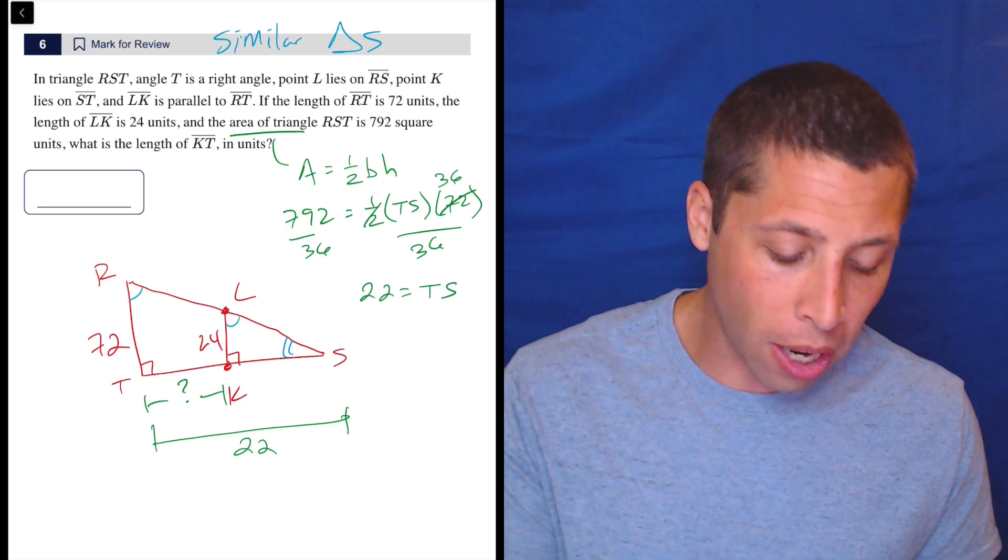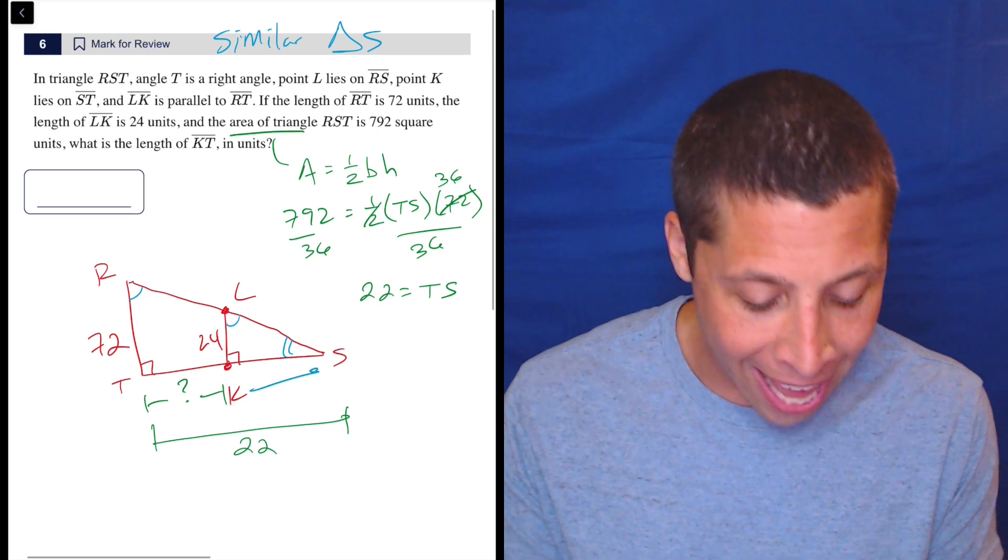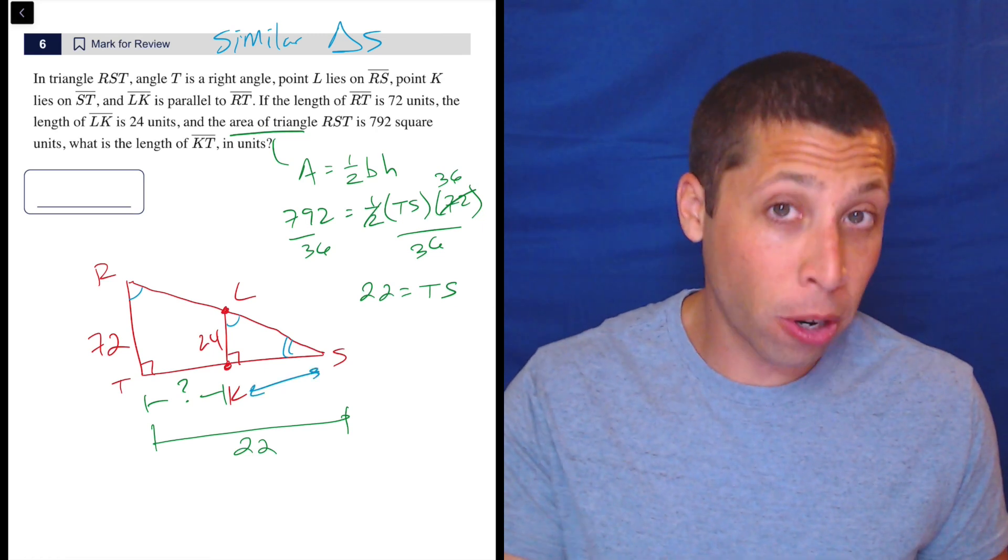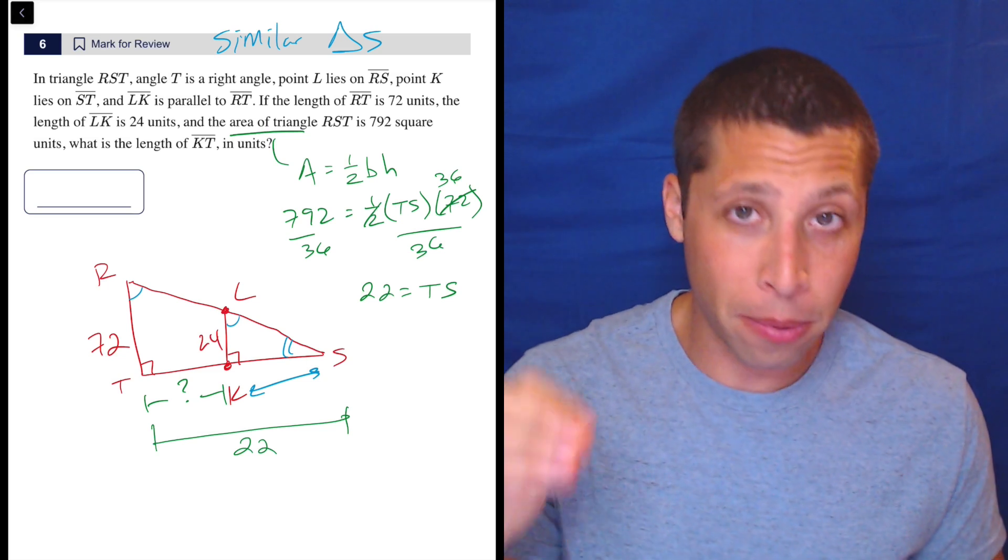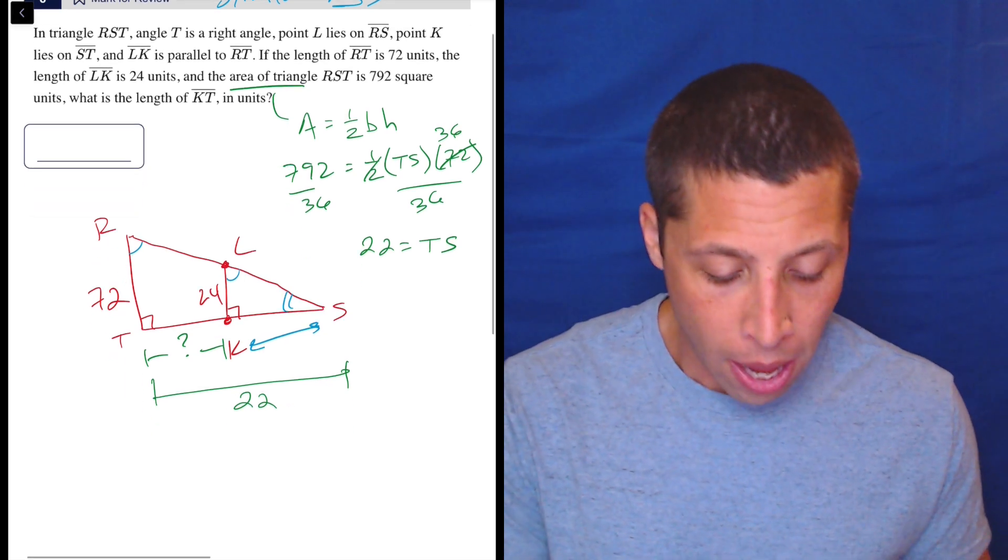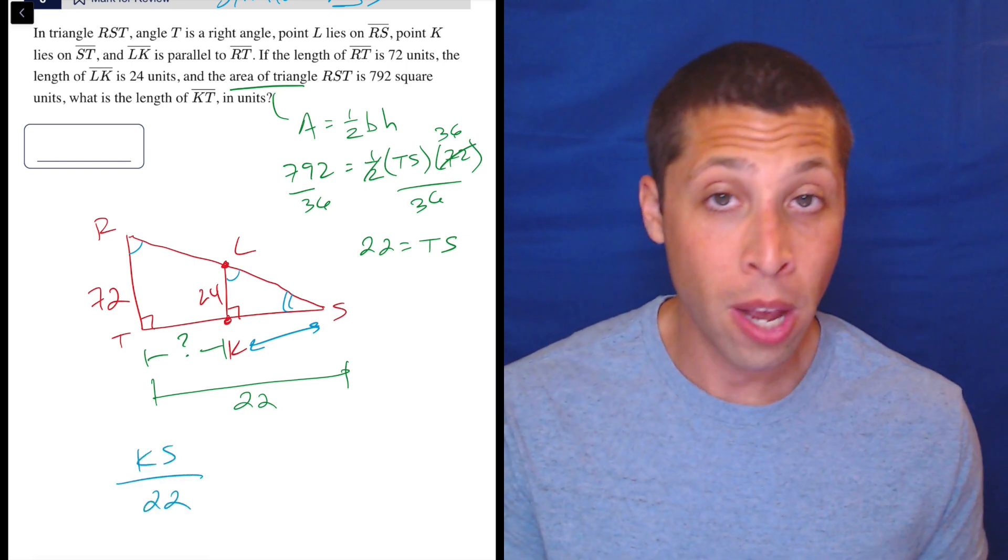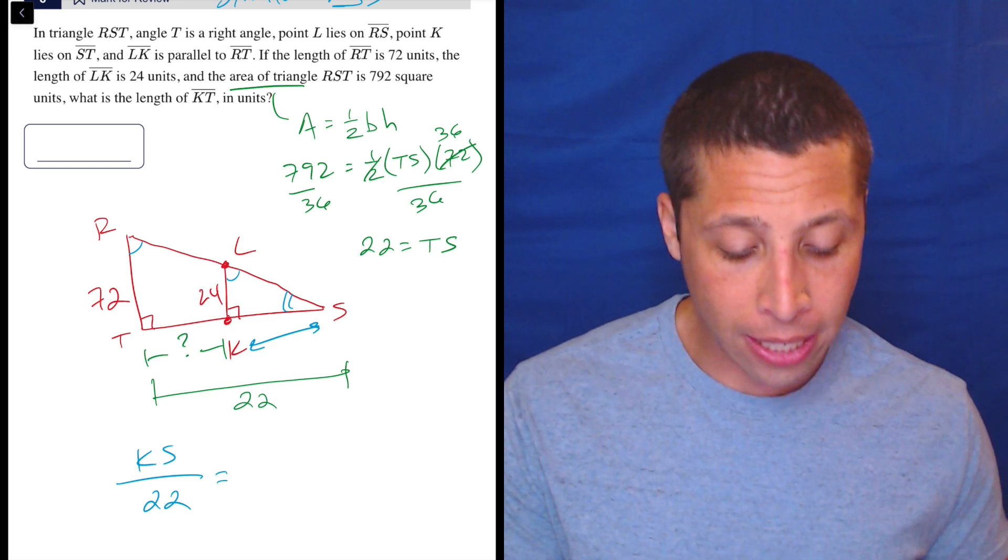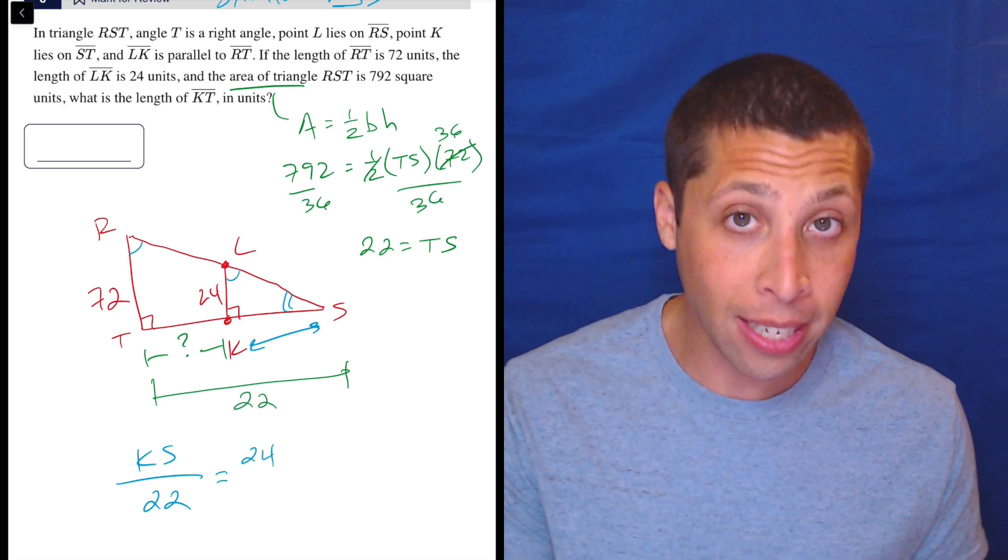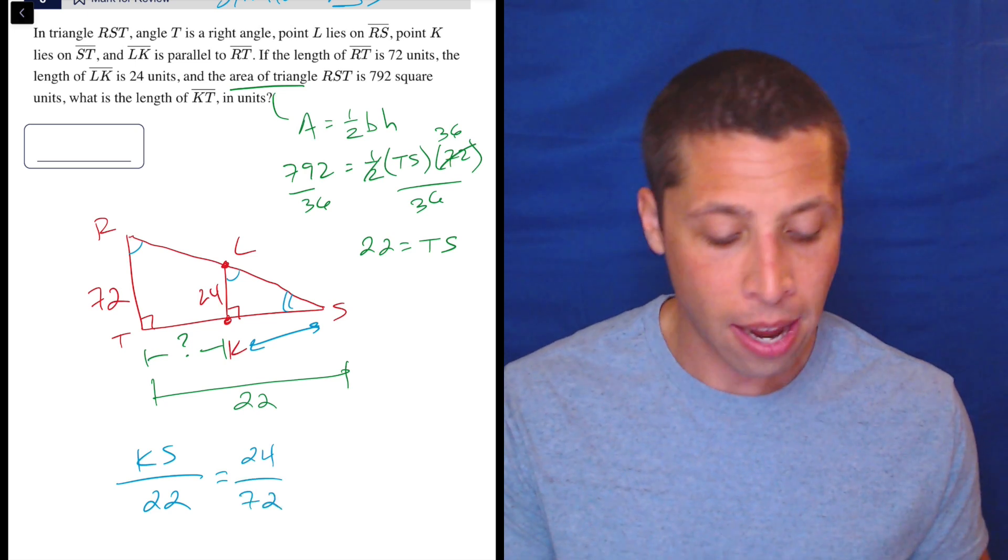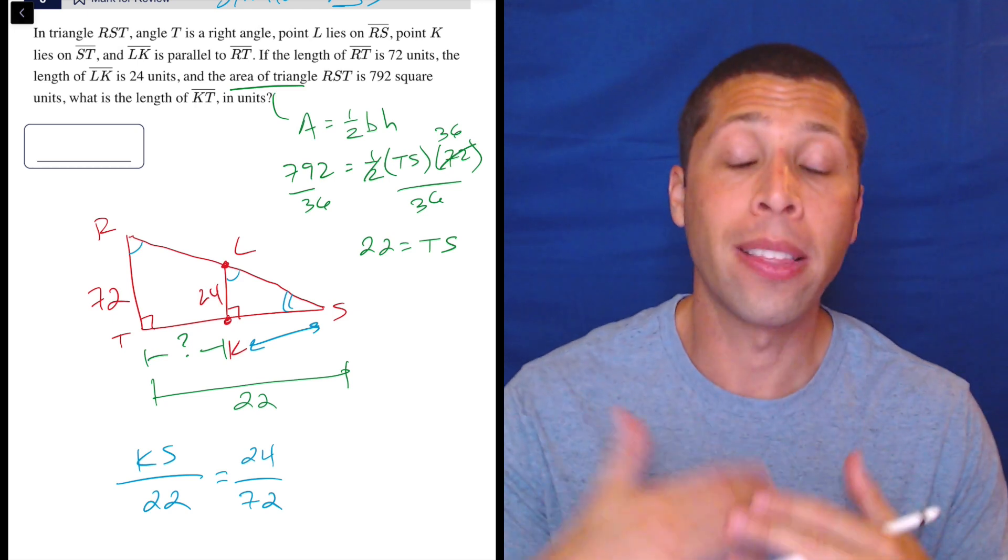Now we know that they are similar, which means in order to understand what's happening with TK, we have to understand what's happening with KS right here, because that's part of the small triangle. TK is not really anything important. So I'm going to set up some proportions to compare these triangles. So I'm going to compare KS, which is the base of the small triangle, to 22, which is the base of the big triangle. And I can also say small to big for the heights. So 24, that LK, is the height of the small triangle, and then 72 is the height of the big triangle. This is why we care about similar triangles, is they let us compare them. The sides are in proportion.